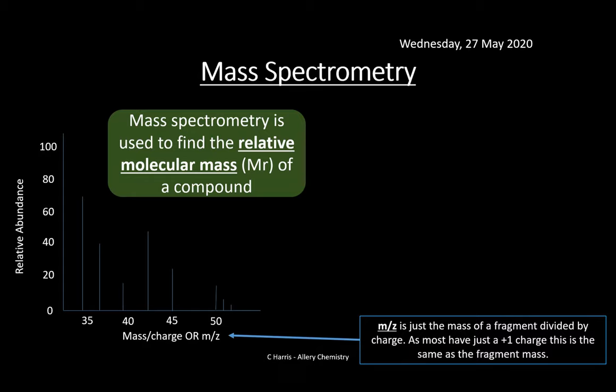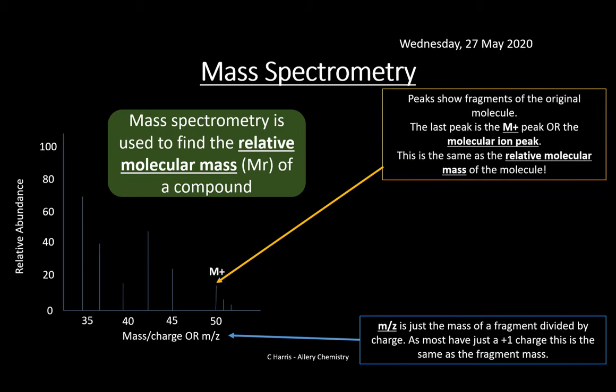The peaks show fragments of the original molecule, but the last significant peak — the one highlighted in yellow — is the molecular ion peak, also known as the M plus peak. This is the same as the relative molecular mass of the molecule. For example, if that peak is at 50, then the molecule has a molecular mass of 50.